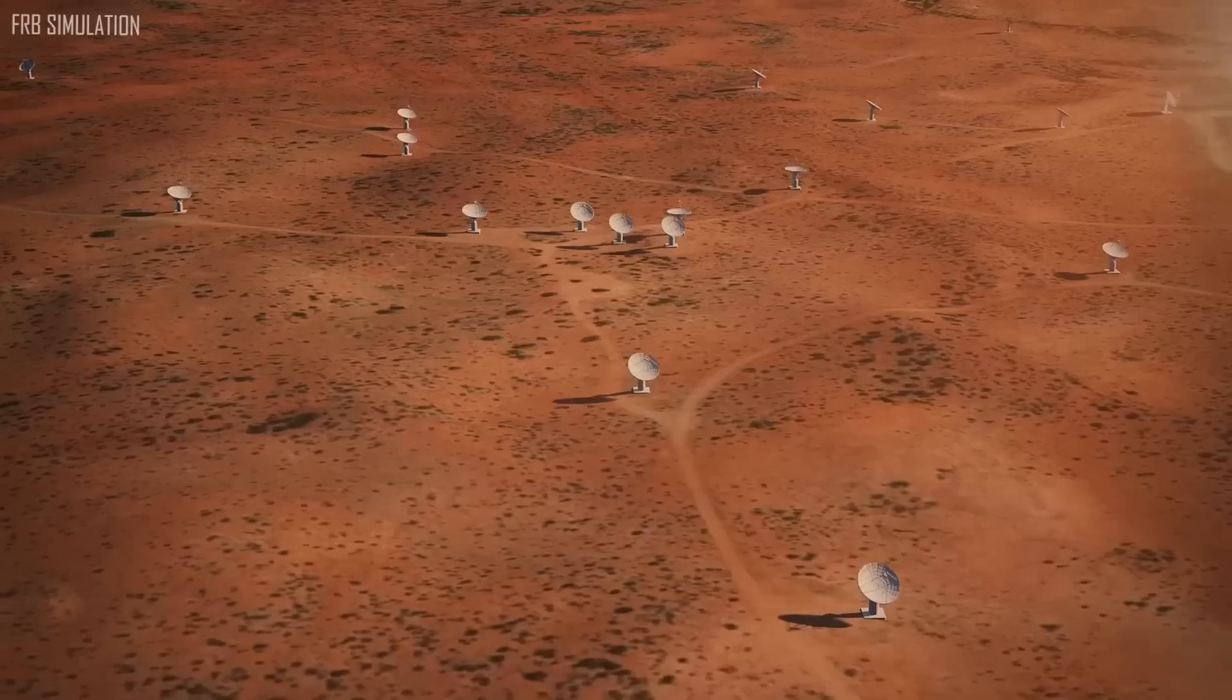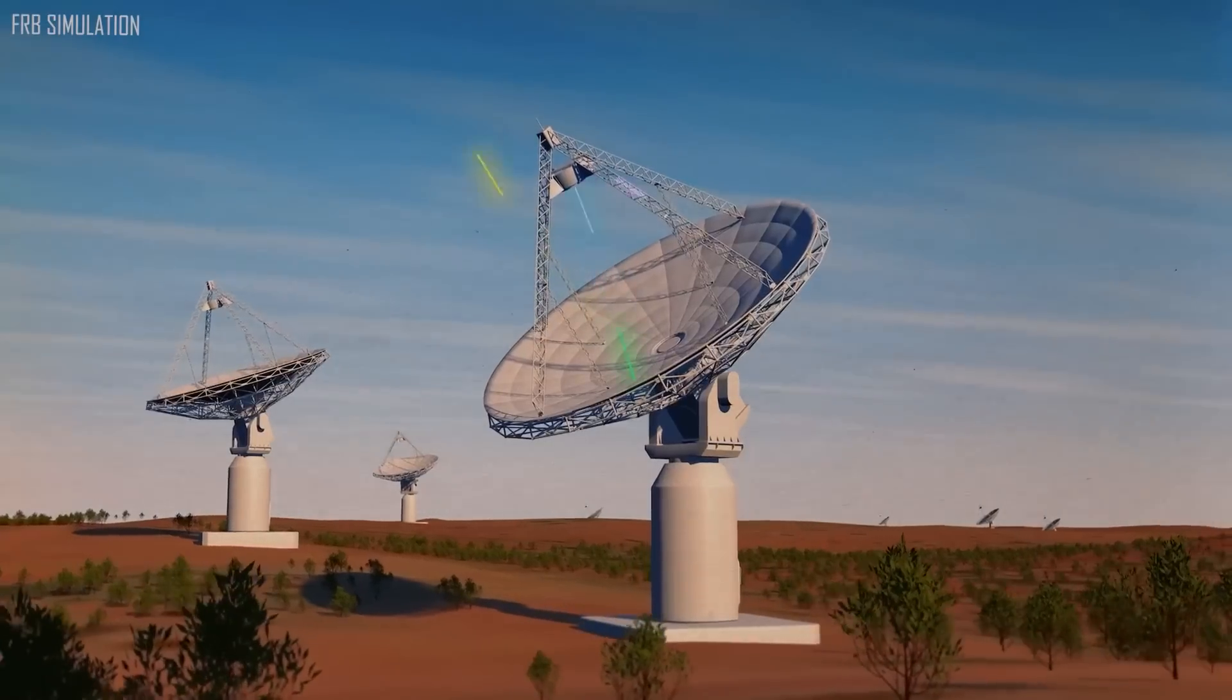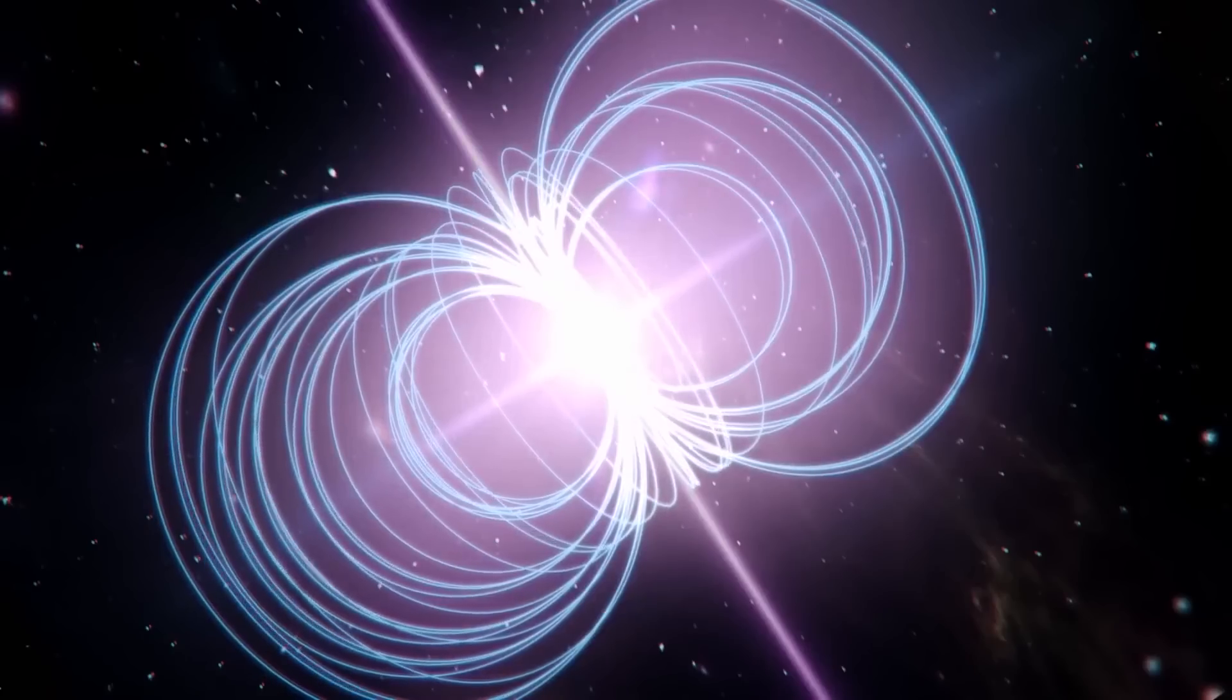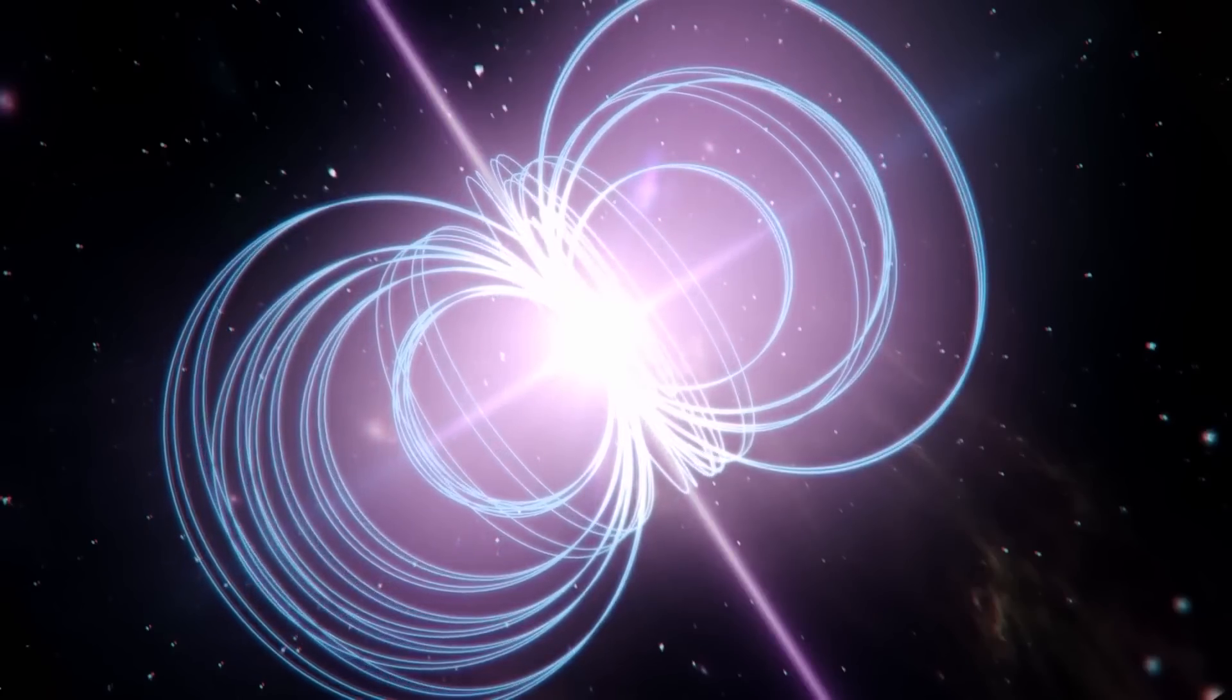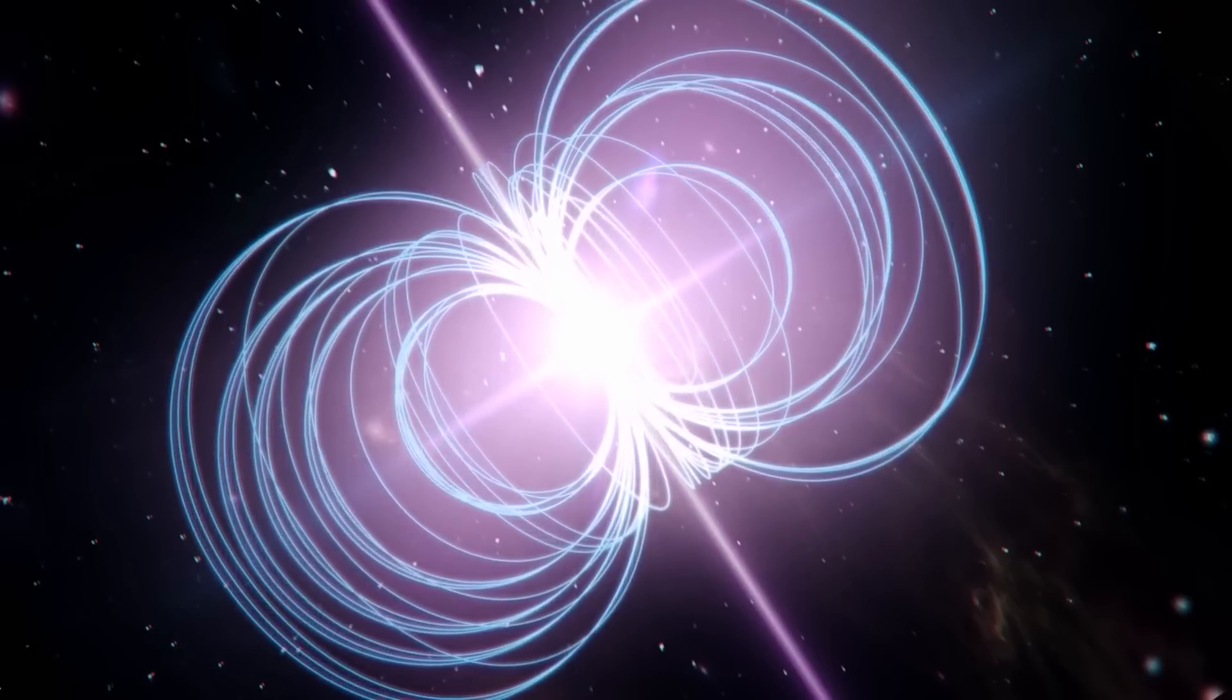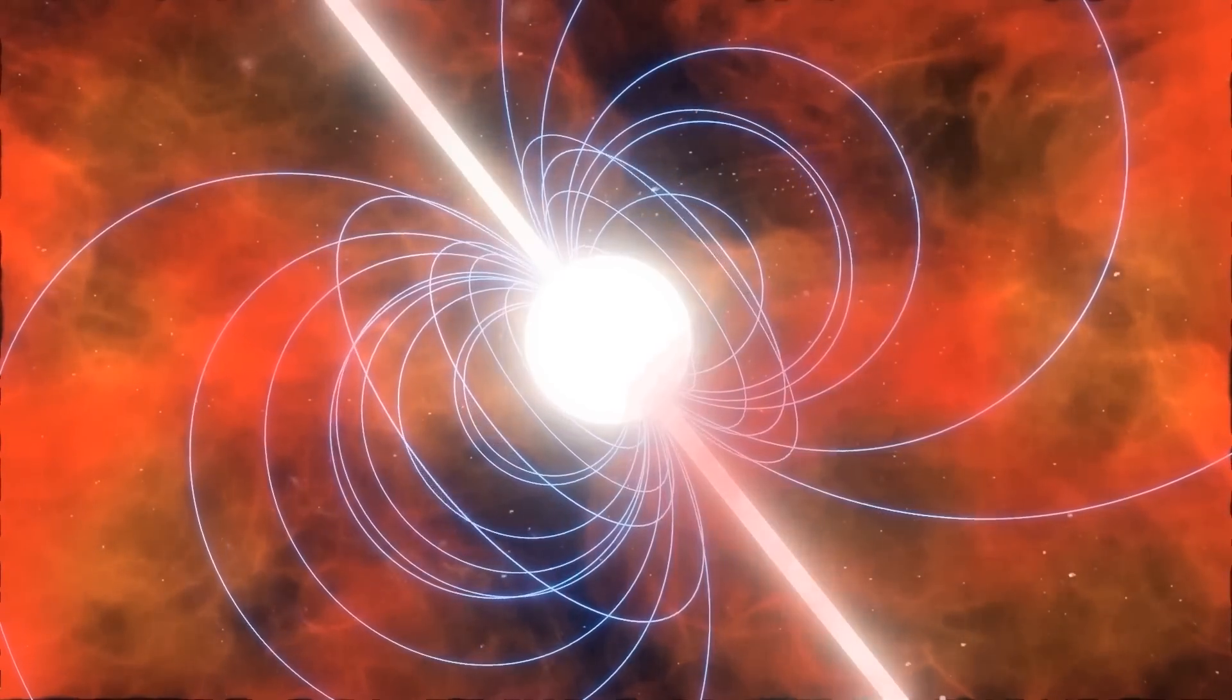Possibly like gamma-ray bursts, which puzzled astronomers for decades after being first identified by a military satellite in the 1960s, rapid radio bursts are created by a variety of pathways. Today, we know that these extremely energetic flashes of gamma rays can be produced by both strong supernovae and colliding neutron stars.